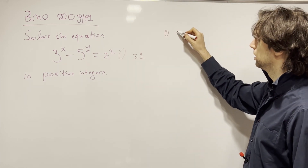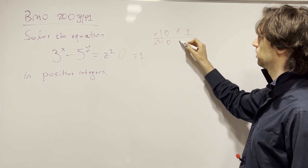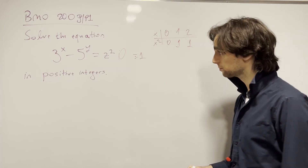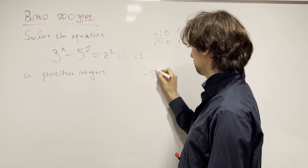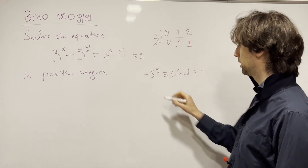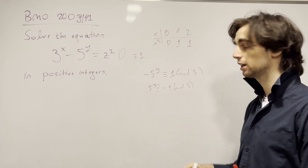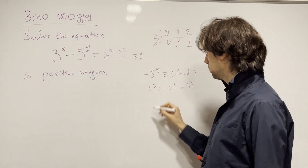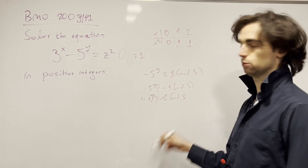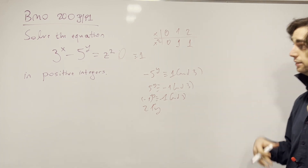You can write it out: x can be 0, 1, or 2 modulo 3, so x squared can be 0, 1, or 1 modulo 3 (since 2 squared is 4, which is 1 modulo 3). So we need minus 5^y to be congruent to 1 modulo 3, meaning 5^y must be congruent to minus 1 modulo 3. Since 5 is congruent to minus 1 mod 3, this means 2 does not divide y — y must be odd.